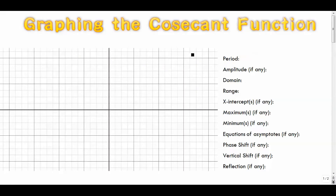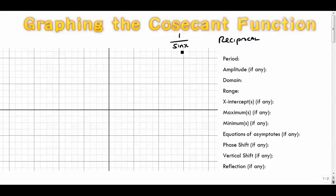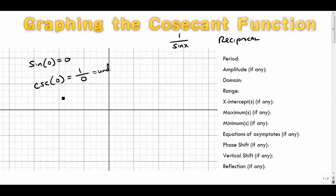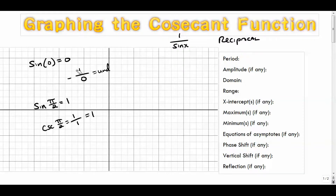Next up is the cosecant function. By definition, cosecant is one divided by the sine function — this is our first reciprocal function. The others are secant and cotangent. Whatever x value you give it, it returns the sine value but reciprocated. For example, the sine of zero is zero, so csc(0) is one over zero, which is undefined. And since the sine of π/2 is one, csc(π/2) is one over one, which is one.